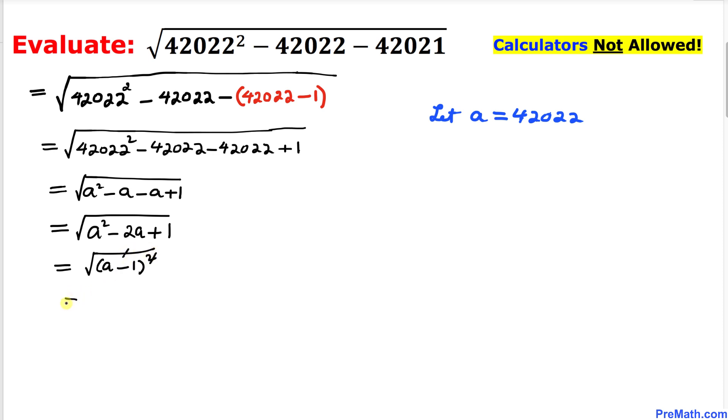Now we can see that this square and square root undo each other, so we got a minus 1. However, our a value is 42022. Let's go ahead and replace that one, so that's going to be 42022 minus 1.